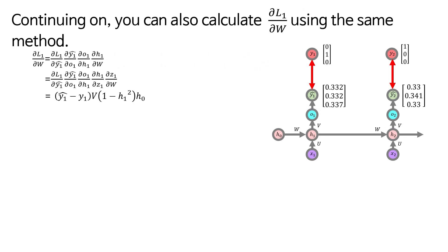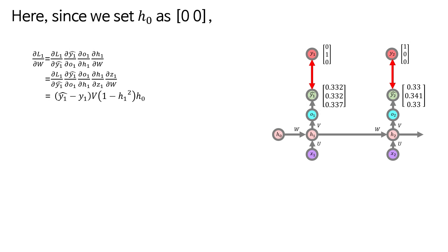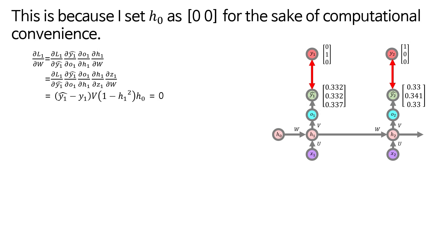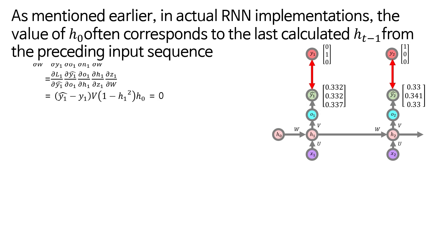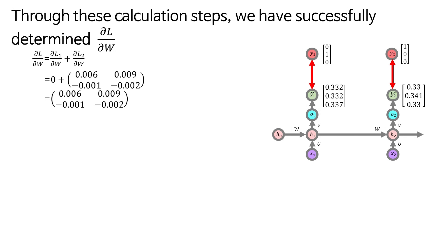Continuing on, you can also calculate del L1 del W using the same method. Here, since we set H0 as 0, 0, the value of del L1 del W becomes 0, but this is because I set H0 as 0, 0 for the sake of computational convenience. As mentioned earlier, in actual RNN implementations, the value of H0 often corresponds to the last calculated H T1 from the preceding input sequence. Through these calculation steps, we have successfully determined del L del W.